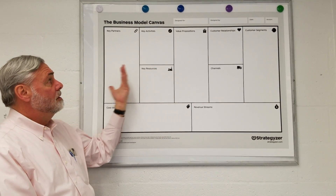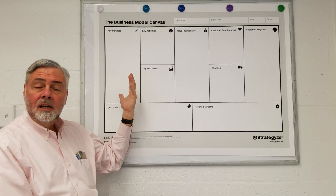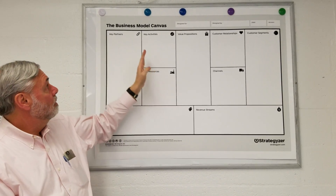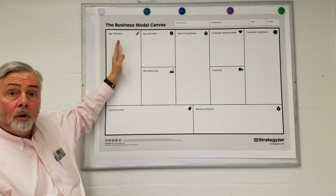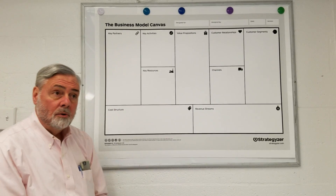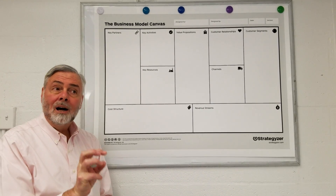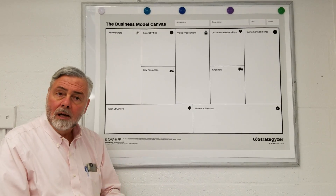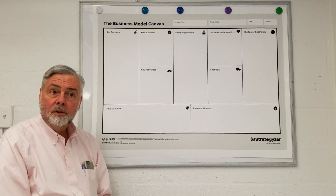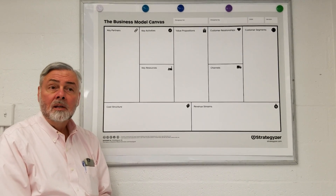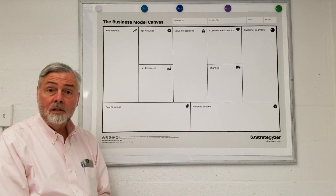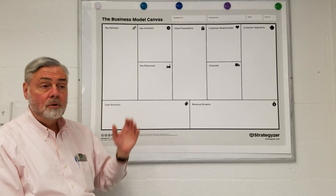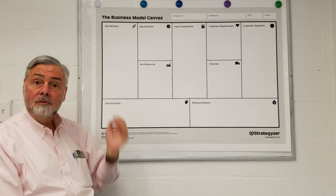The left side of the canvas is the operational and cost side. The main element here is your key partners — think hard about who, outside your venture, you need to have a relationship or agreement with to make your venture successful. Sometimes that's intellectual property: if you need to license a technology from somebody, they would be a partner outside your venture.